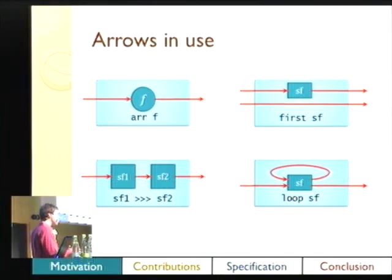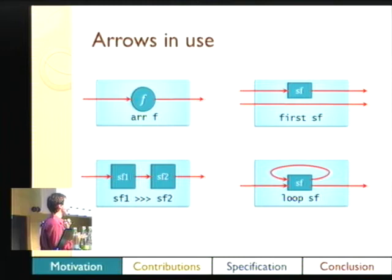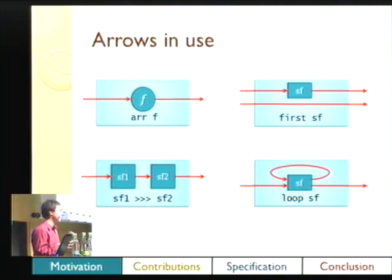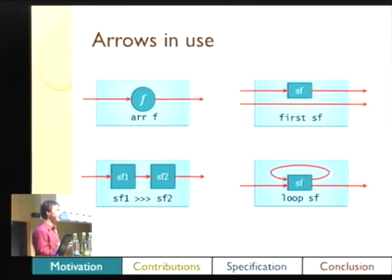When you go to use arrows, you can use the arrow syntax, which turns into these arrow combinators. You can turn a pure Haskell function F into an arrow, into a signal function, with the `arr` function. You can do partial application with `first`, composition, and even a looping where you feed output back into the input.